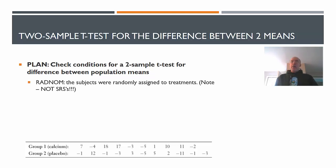Our random condition here - now you have to be careful here. The subjects were randomly assigned to treatments. We had 21 volunteers. They were randomly assigned to one of two treatment groups. So we do not have SRSs. We have one sample of men randomly assigned to treatments.